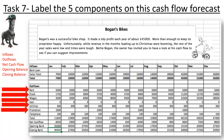Task seven: label the five components on this cash flow forecast. Don't be put off by the amount of numbers — all you're doing is moving the five arrows on the left to the right point, and moving the red text as well, labelling the five components.